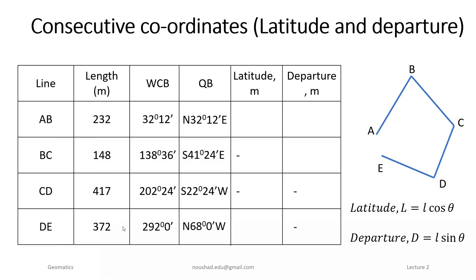The bearing angle is given in whole circle bearing (WCB), and the reduced bearing angle is the quadrant bearing angle. For latitude calculation, we use the equation L cos θ. In the first case, the line length is 232, so: 232 × cos(32° 12').